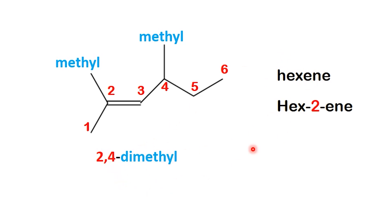Finally, we put everything together: the substituents, the parent chain, and the double bond position. The complete name of compound A is 2,4-dimethyl hex-2-ene.